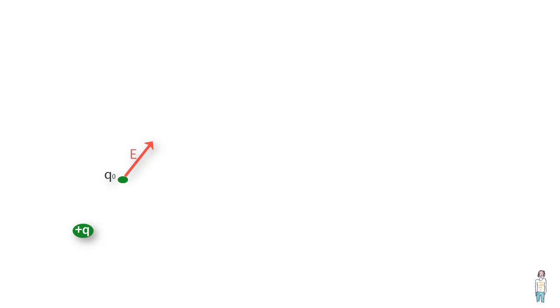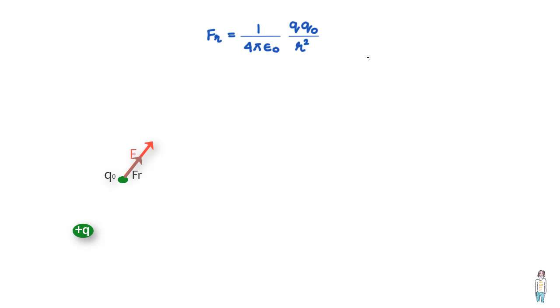Let us start with a simpler situation where Q naught moves radially in a straight line. Coulomb's law tells us that the force on such a charge would be 1 upon 4π epsilon times QQ naught upon R squared when it is at a distance R. We also know that this force changes as the distance R changes, and we would therefore need to use integration to find the work done by this force on Q naught.